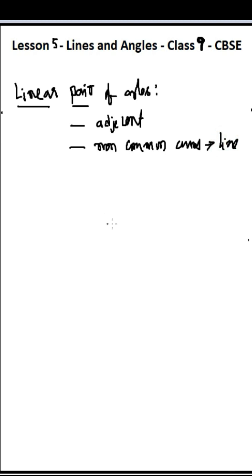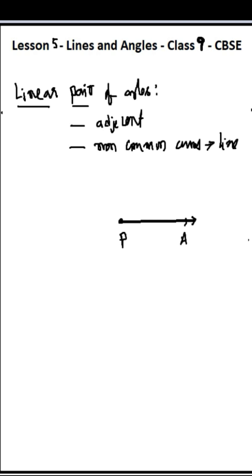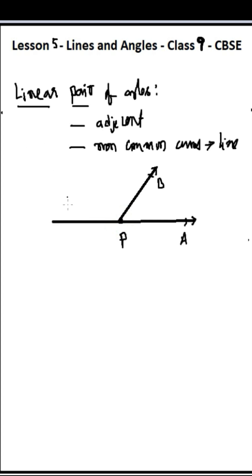Let me explain with a diagram. Let P be the common vertex. Let us draw ray PA as one ray, and ray PB as the common ray. The non-common arms are PA and PC — ray PC should be straight to PA. So these two rays, the non-common arms PA and PC, should form a line. Then angle 1 and angle 2 are also adjacent angles. Angle APB and angle BPC are both adjacent angles.